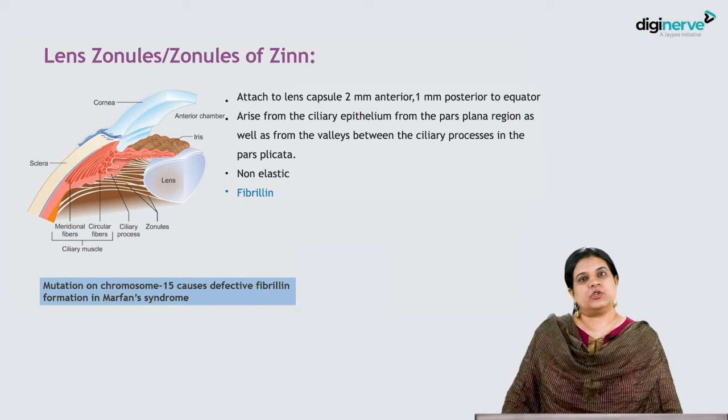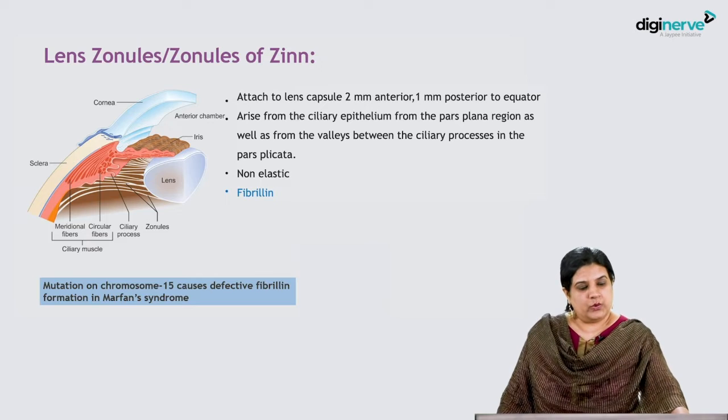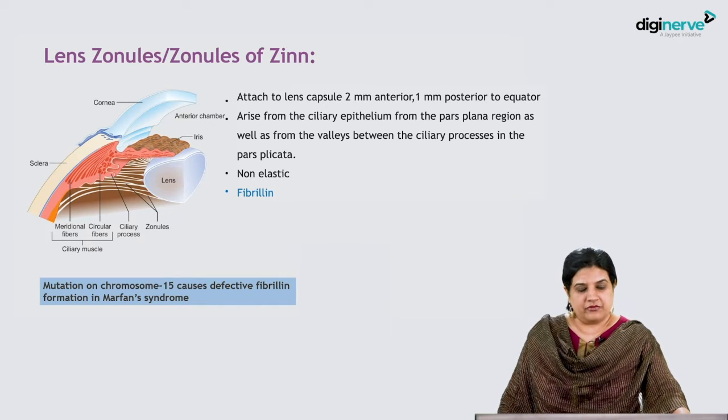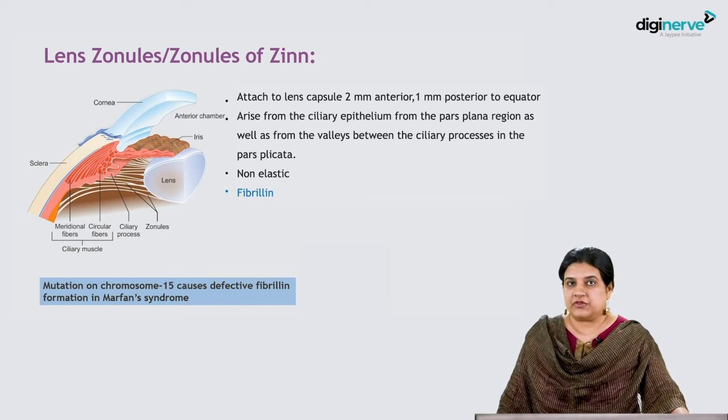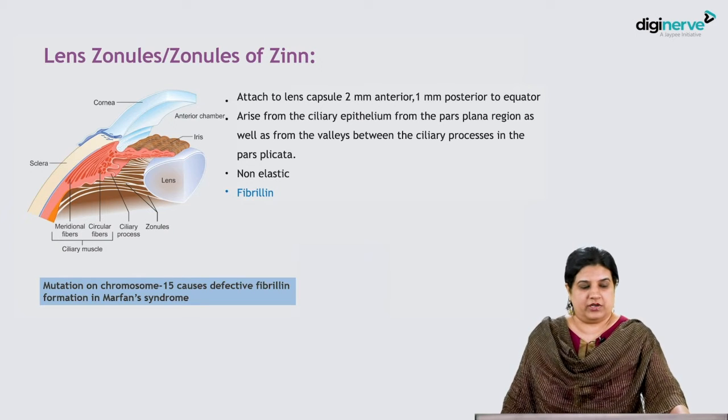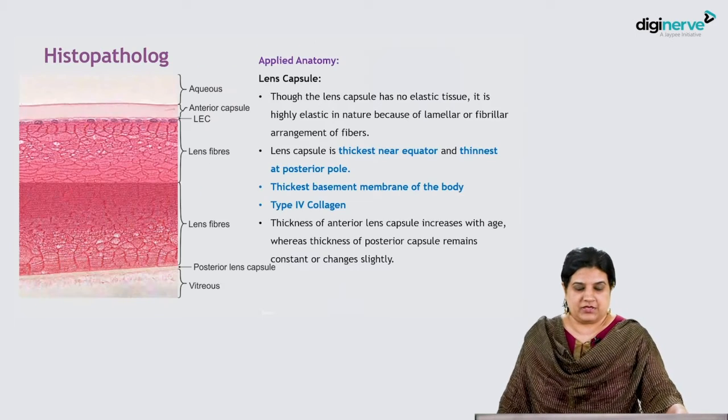These patients are likely to have ectopia lentis, meaning the lens gets subluxated in an abnormal position. Ectopia lentis is seen in Marfan's—the chromosome involved is 15 and the protein is fibrillin.